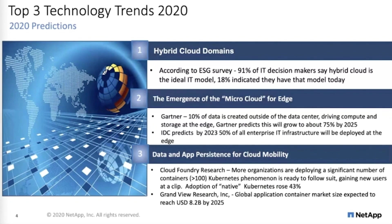That says there's a lot of opportunity and problem solving needed to help customers get to a hybrid environment. The second most talked-about area is the edge — no surprise here. Data creation outside of the data center is accelerating, and IT needs to plan for infrastructure deployment at the edge. With 5G and IoT, these two innovative technologies will bring even more focus to the edge. By 2023, Gartner and IDC both predict that 50% of all enterprise IT infrastructure will be deployed at the edge.